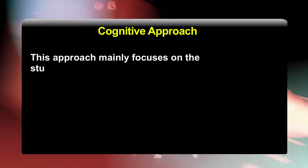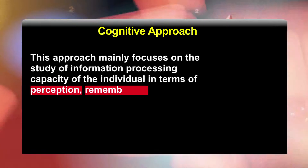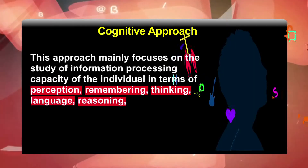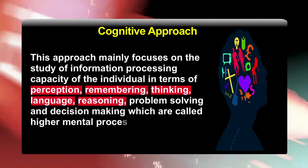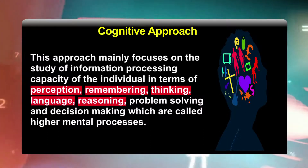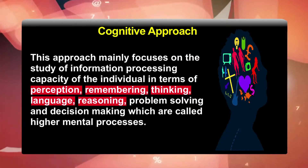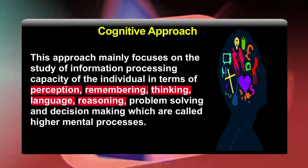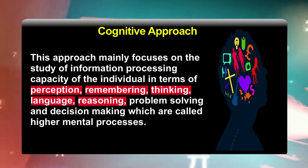Cognitive approach. The cognitive approach emerged as an alternative to the mechanistic paradigm of behaviorism. This approach mainly focuses on the study of information processing capacity of the individual in terms of perception, remembering, thinking, language, reasoning, problem-solving and decision-making. It proposes that we look out for information in the world and our behavior depends upon the way we process this information. This approach largely relies on computational models and assumes that behavior and mental processes can be best understood by treating them in terms of information processing.